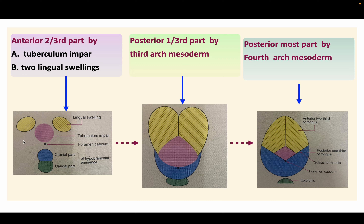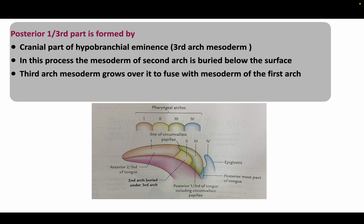This is the sequence of events: fusion occurs such that the tongue is initially bifid, and later a shape emerges. The anterior two-thirds arises from the lingual swellings and tuberculum impar region. The posterior one-third is derived from the third arch mesoderm via the cranial part of the hypobranchial eminence. In this process, the mesoderm of the second arch is buried below the surface as the third arch mesoderm grows over it to fuse with the mesoderm of the first arch.